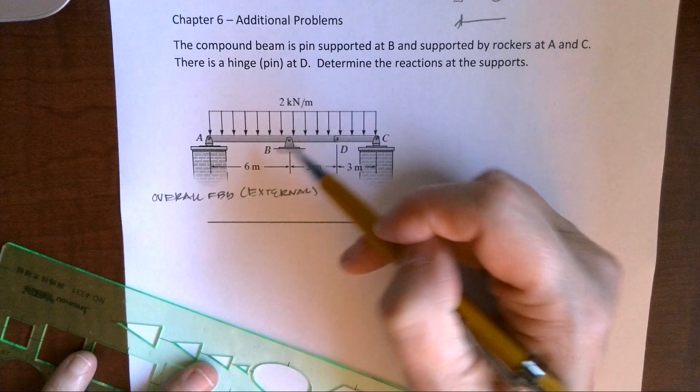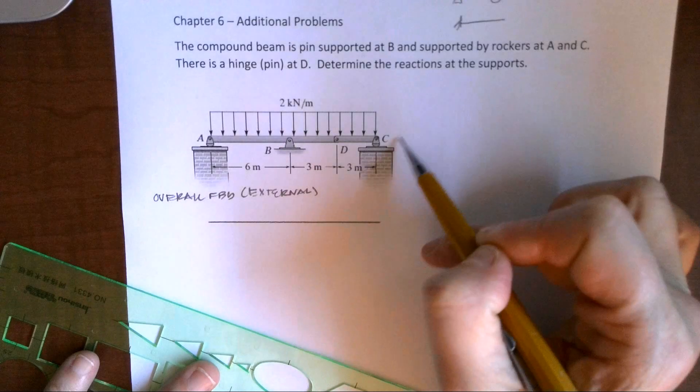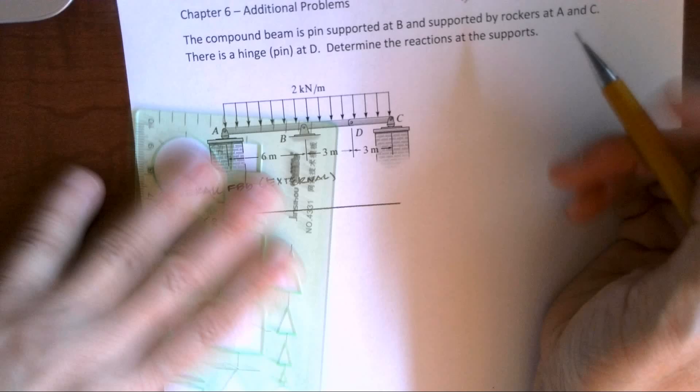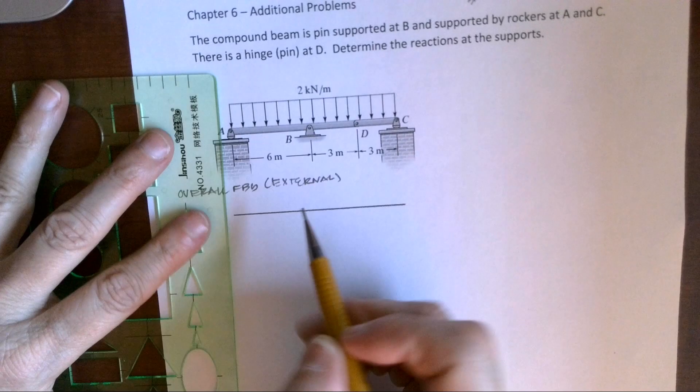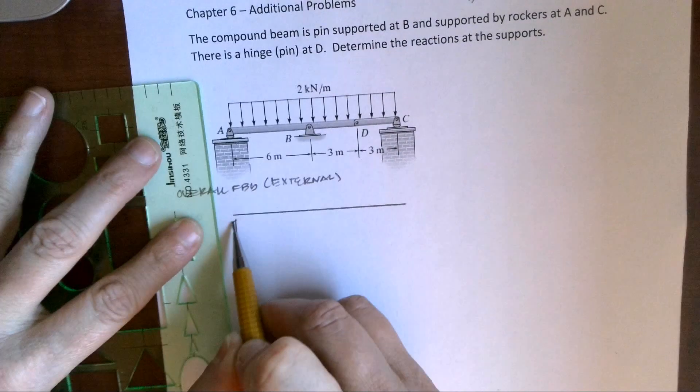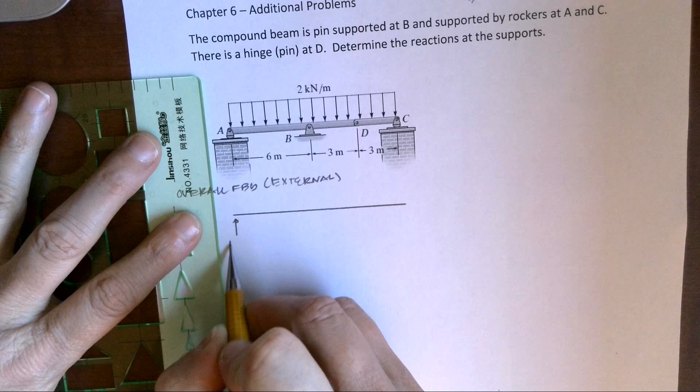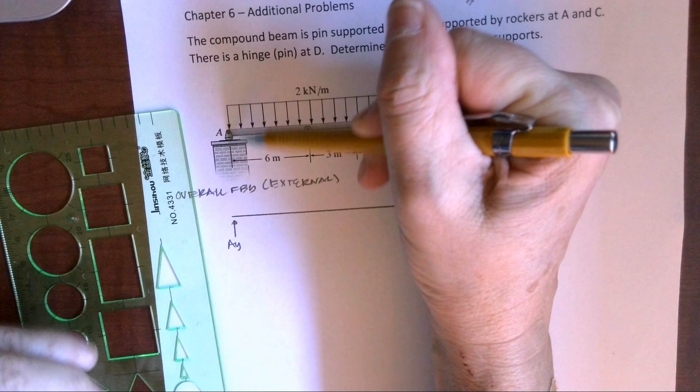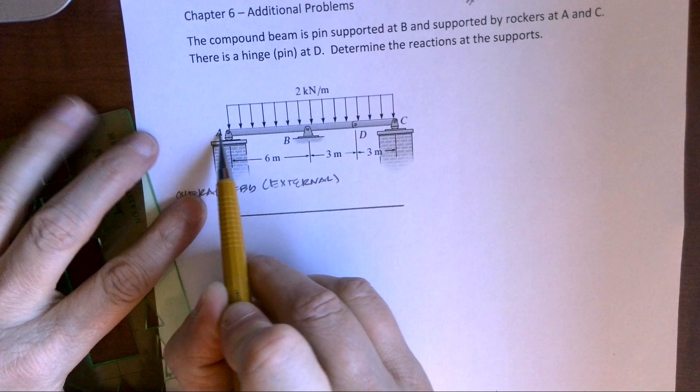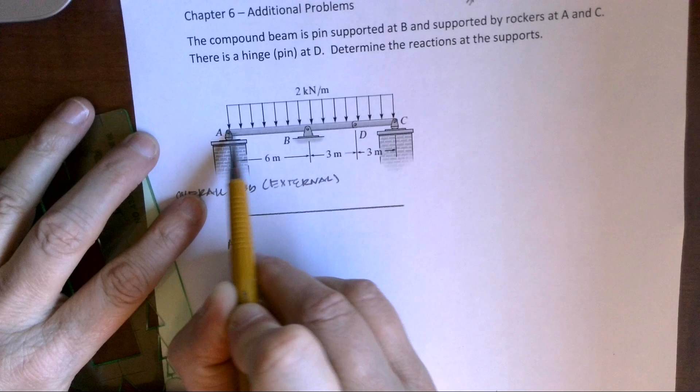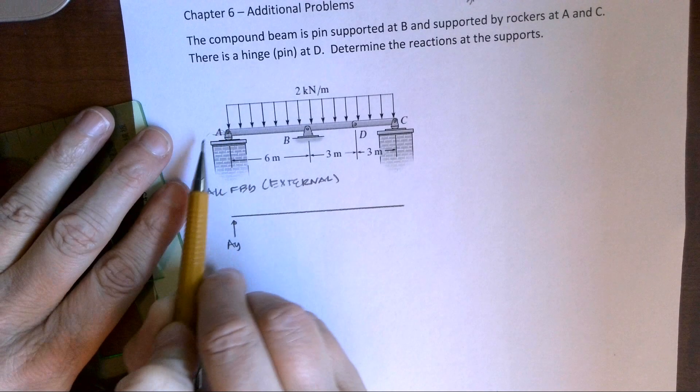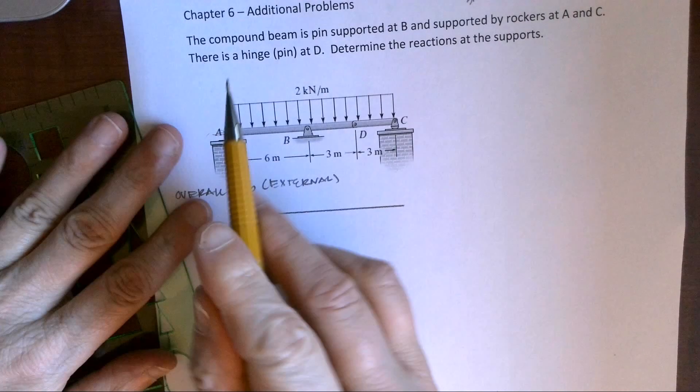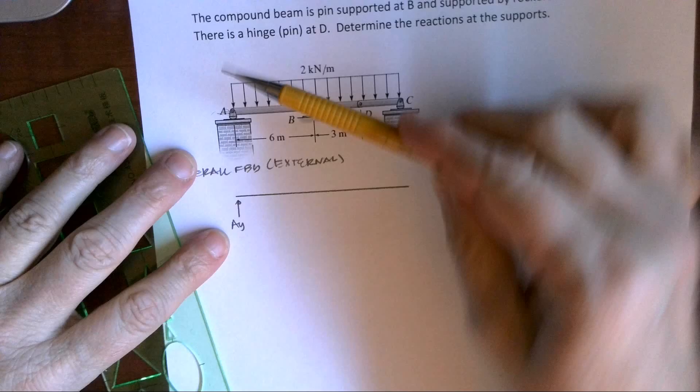When I look at overall, I look at external only. I don't consider internal pins. I'm just going to pretend that that's not even there. I'm just going to consider my reactions and any loads that I might have. So I can see right here at A, I have a rocker. And a rocker will develop resistance in this Y direction. If I push down, I can't go anywhere. But much like a skateboard, if I push with an X force, it's going to rock and not resist. So we don't develop a load.